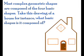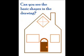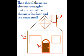Most complex geometric shapes are composed of the four basic shapes. Take this drawing of a house for instance. What basic shapes is it composed of? Looking at the house, can you see the basic shapes in the drawing? There's the obvious rectangular windows, then there's the not so obvious rectangles that are part of the chimney, the door, and the house itself.